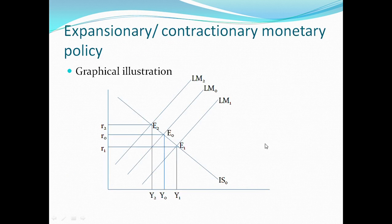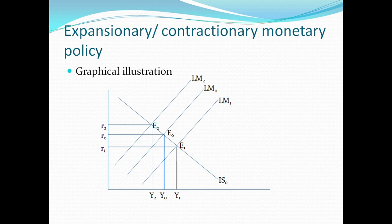On our next slide, we have the graphical illustration of contractionary and expansionary monetary policy. On the Y-axis we have the interest rates, and on the X-axis we have the national income or national output. The IS curve slopes downward from left to right and shows the combinations of interest rates and income at which the goods market is in equilibrium. The LM curve shows the different combinations of interest rate and income at which the money market is in equilibrium. Where both curves intersect — where the goods market and money market are both at equilibrium — is at point E0, where IS0 and LM0 meet, giving us an equilibrium level of interest rates and national output.